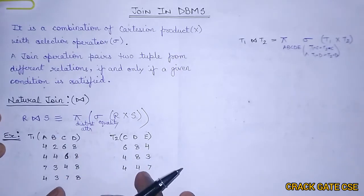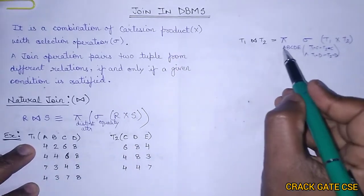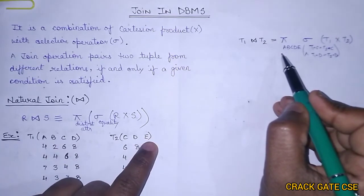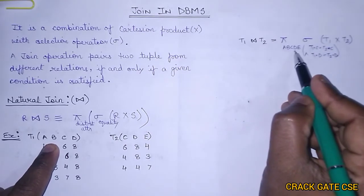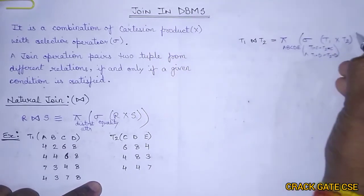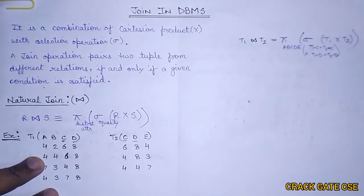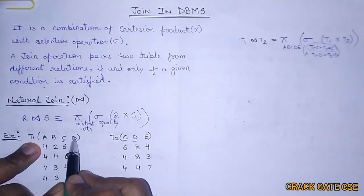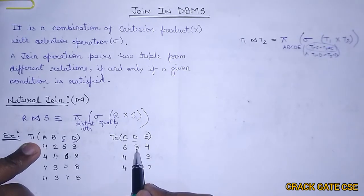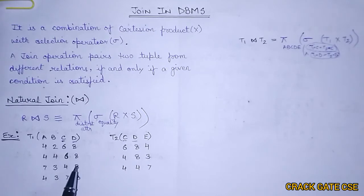Let's understand this with an example. If we want to perform T1 join T2, the query projects distinct attributes A, B, C, D, E — we cannot repeat C and D because only distinct attributes are projected. The condition checks T1.C = T2.C and T1.D = T2.D, since C and D are common attributes between the two tables. If these two conditions are satisfied, then we can join the two relations.